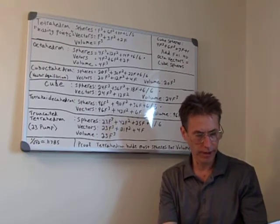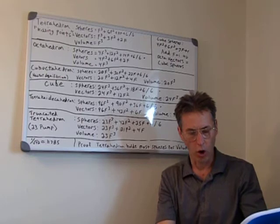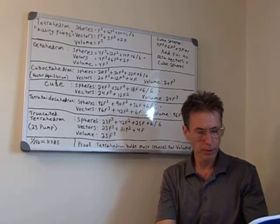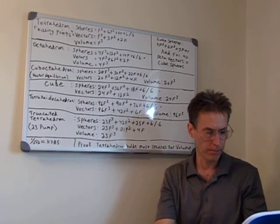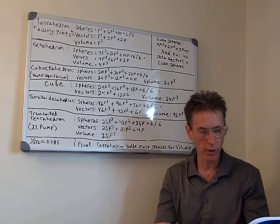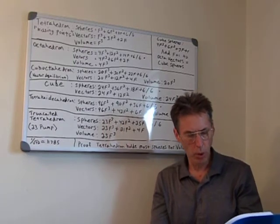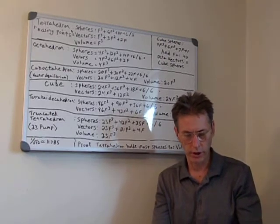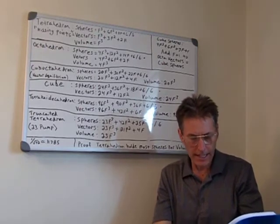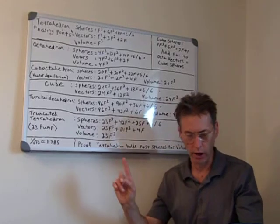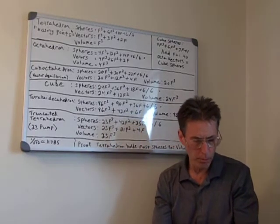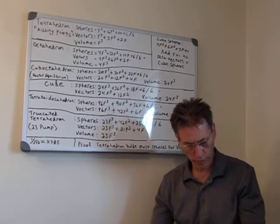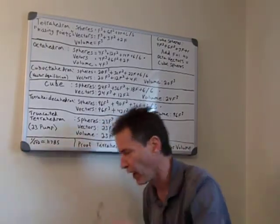Bucky goes on, saying in section 400.56: 'All systems are polyhedra. All polyhedra are systems. Proofs must proceed from the minimum whole system.' He goes on to say in section 1052.361: 'Proofs must proceed from the minimum whole system to universe and the differentiation out of universe of the special case conceptual system. Proofs must start from the minimum structural system, which is that tetrahedron we're talking about. All geometrical and numerical values derive from fractionation of the whole.' That's very powerful.